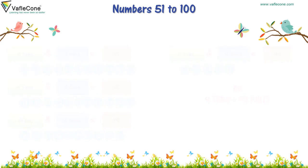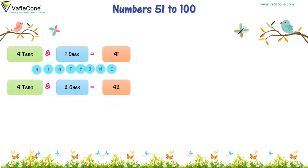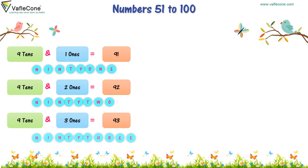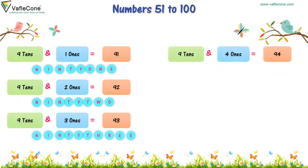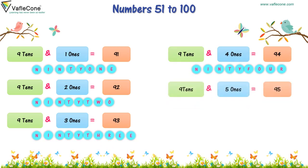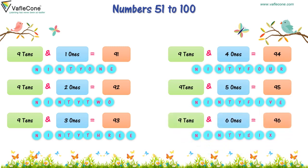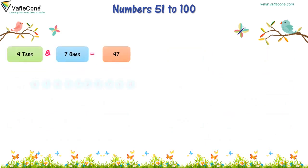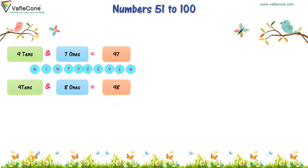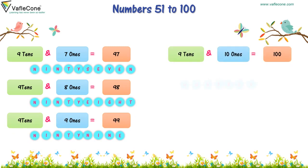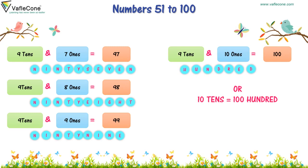9 tens and 1 one is equal to 91. 9 tens and 2 ones is equal to 92. 9 tens and 3 ones is equal to 93. 9 tens and 4 ones is equal to 94. 9 tens and 5 ones is equal to 95. 9 tens and 6 ones is equal to 96. 9 tens and 7 ones is equal to 97. 9 tens and 8 ones is equal to 98. 9 tens and 9 ones is equal to 99. 9 tens and 10 ones is equal to 100, or 10 tens is equal to 100.